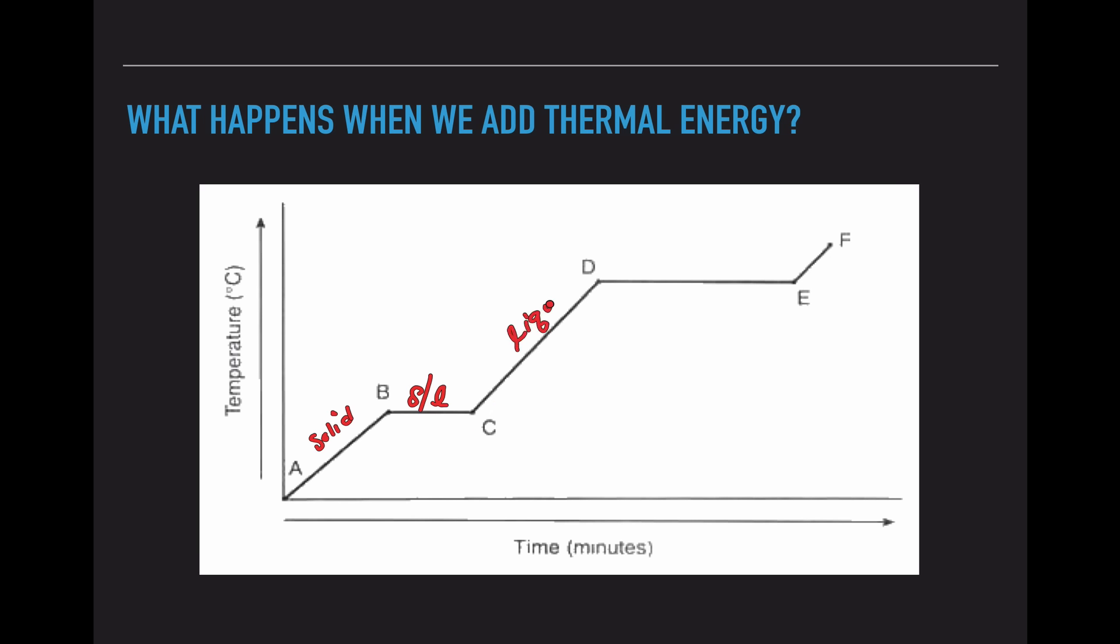Once all particles are broken apart and flowing freely, this diagonal shows liquid only. As we add heat energy, they start moving and flowing faster. Once we hit this section, we have liquid and gas. We're still adding energy—our hot plate is still on—but instead of making the liquid move faster, the energy goes to breaking the bonds.